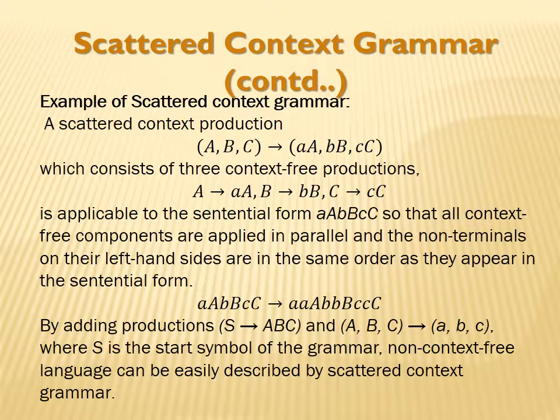If we add productions (A, B, C) → (A, B, C) and (A, B, C) → (A, B, C), then scattered context grammar can also describe A to the power N, B to the power N, and C to the power N, where N is greater than 1, which is actually a context-sensitive language.